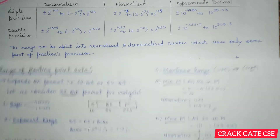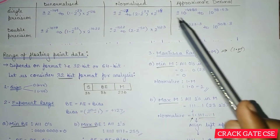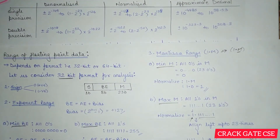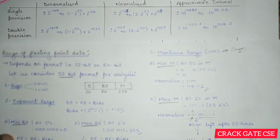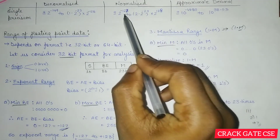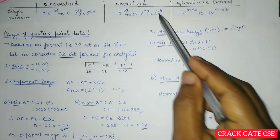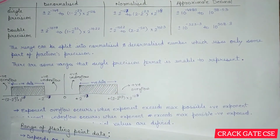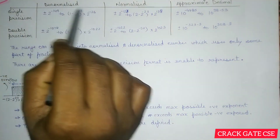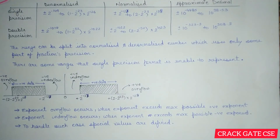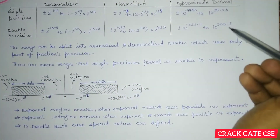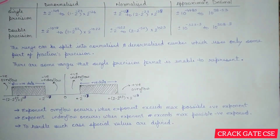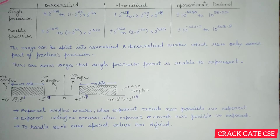Here is a table for better understanding. For single precision, normalized values vary from ±2^(-127) to ±(2 - 2^(-23)) × 2^128. In the denormalized case, values vary differently — I'm not explaining denormalized in detail as it's not very important for GATE. Similarly, you can find the range for double precision, and the approximate decimal values are also given.